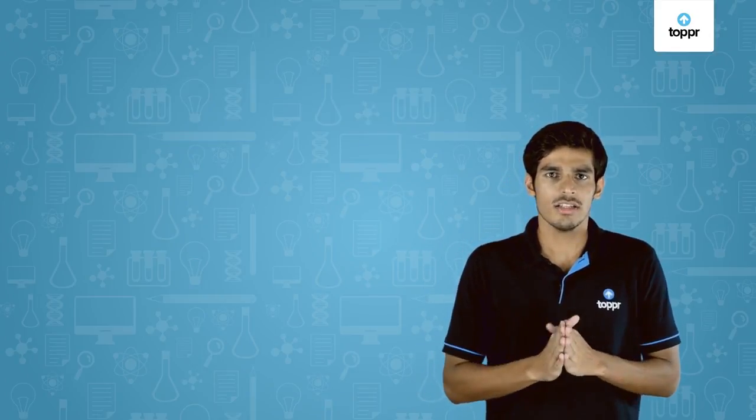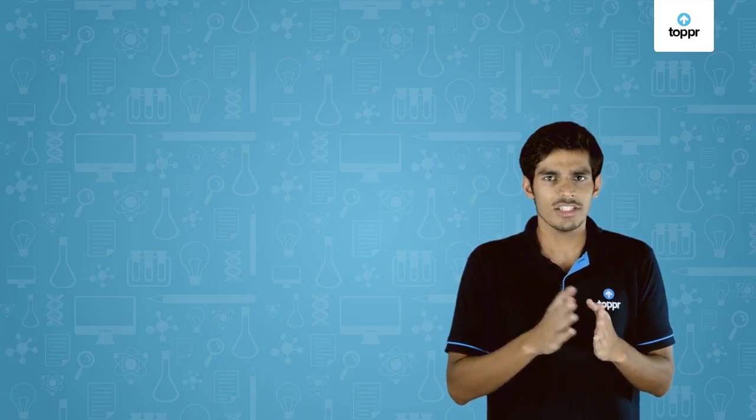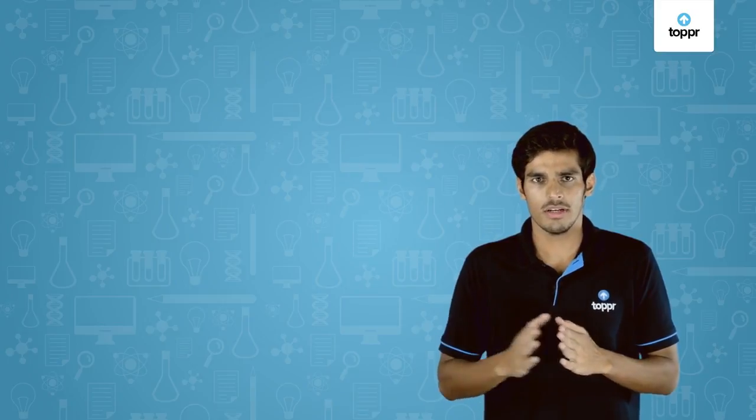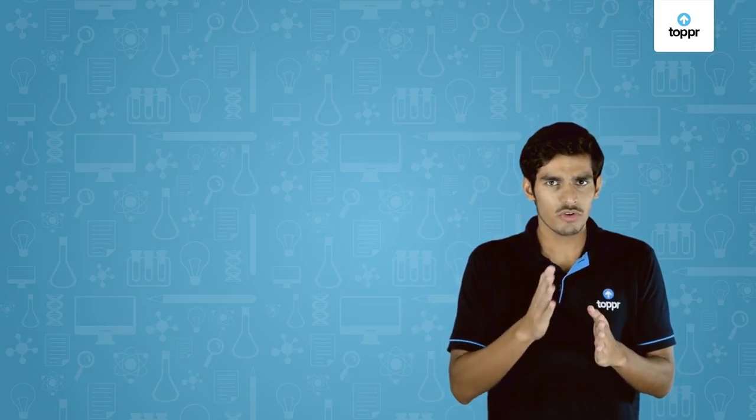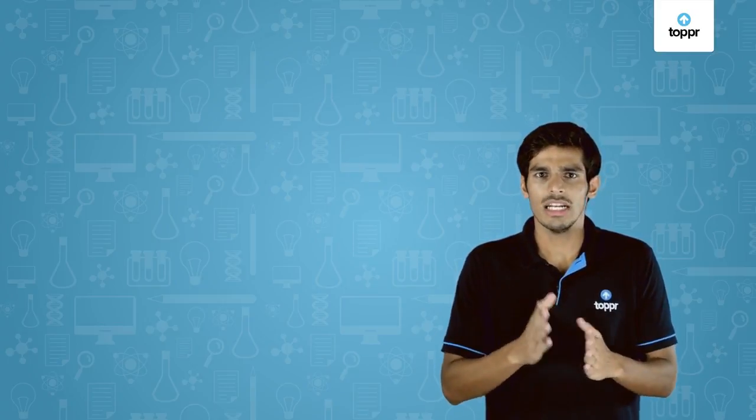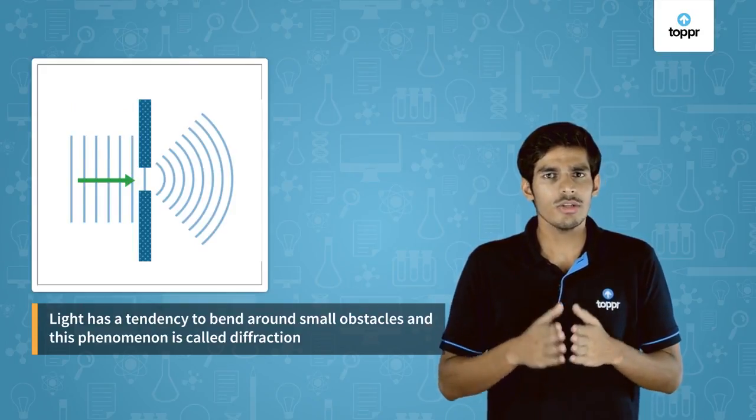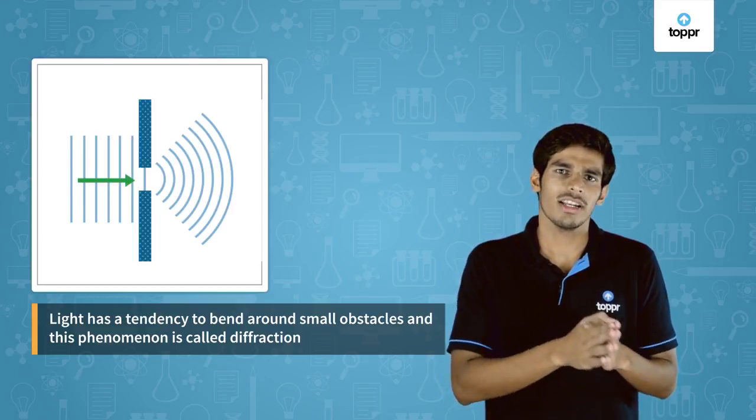In the start of the lesson I told you that light travels in straight lines and it casts a shadow if an opaque object comes in between. But if the size of the opaque object is very small, light has a tendency to bend around it and we call this effect diffraction. You'll study more about this effect in your higher classes.